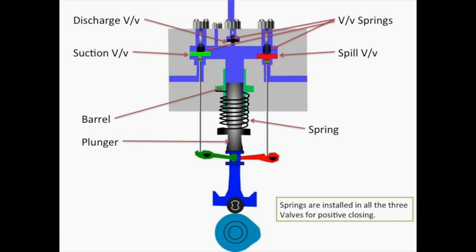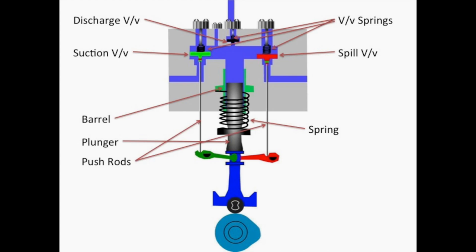Valve springs in all three valves ensure positive closing. Two pushrods are installed in suction and spill valves for opening these valves. Two eccentric rocker arms operate the pushrods.